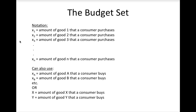We call the combinations of goods that a consumer can afford the budget set. In order to more carefully think about the budget set, it is helpful to first define some notation. Normally, we will represent the amount of a good that a consumer purchases with the letter X, followed by a numerical subscript to differentiate one good from another. However, there are alternative forms of this notation — we could use letters instead of numbers for subscripts, or simply use different letters to represent different goods. We will be using all three types of notation during various parts of this class, so please try to be flexible.